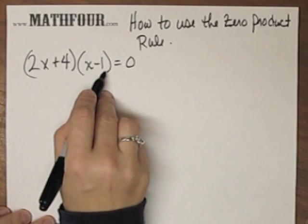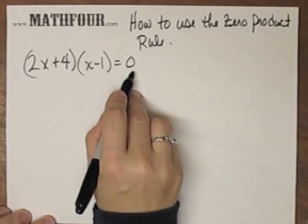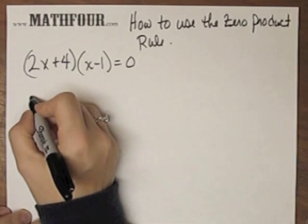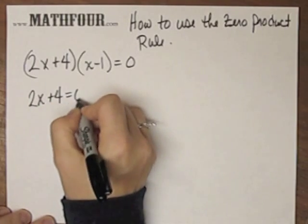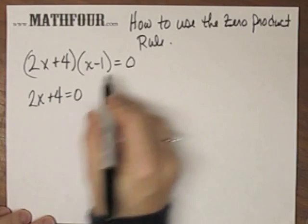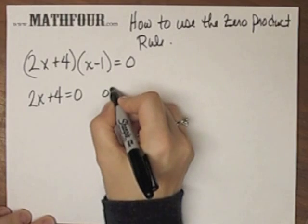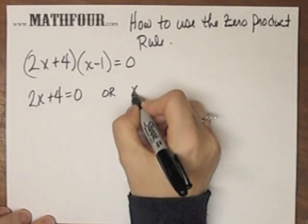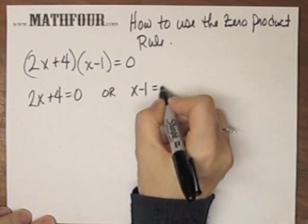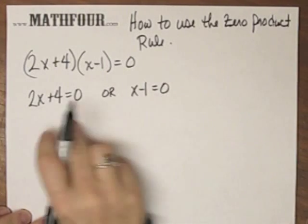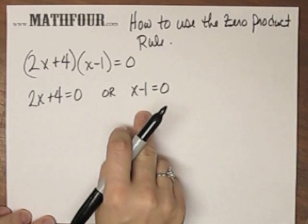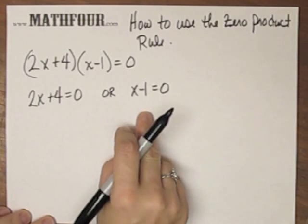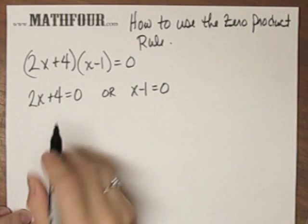So I have these two things multiplied together, and they're equal to zero. What that helps me do is separate them and say either that one's equal to zero, or this guy is equal to zero. And once I know that, all of a sudden I have some very easy equations to solve.